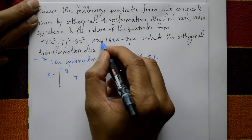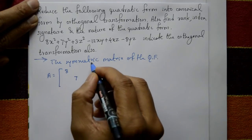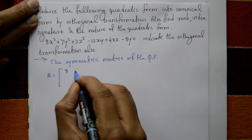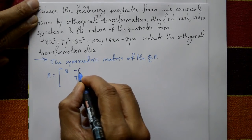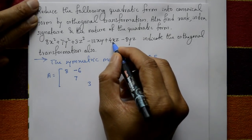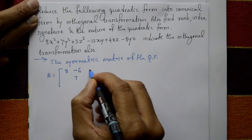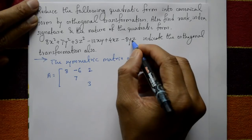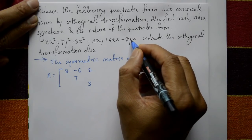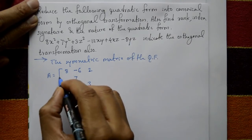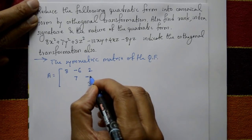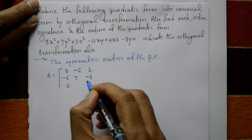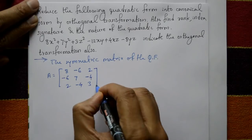Now for x and y: the element is half the coefficient of xy. Coefficient of xy is −12, so half coefficient is −6. Half coefficient of xz: coefficient is 4, so the element is 2. And for −8yz: half coefficient of yz is −4. So the symmetric matrix A has diagonal entries 8, 7, 3 and off-diagonal entries −6, 2, −4. This is a symmetric matrix.